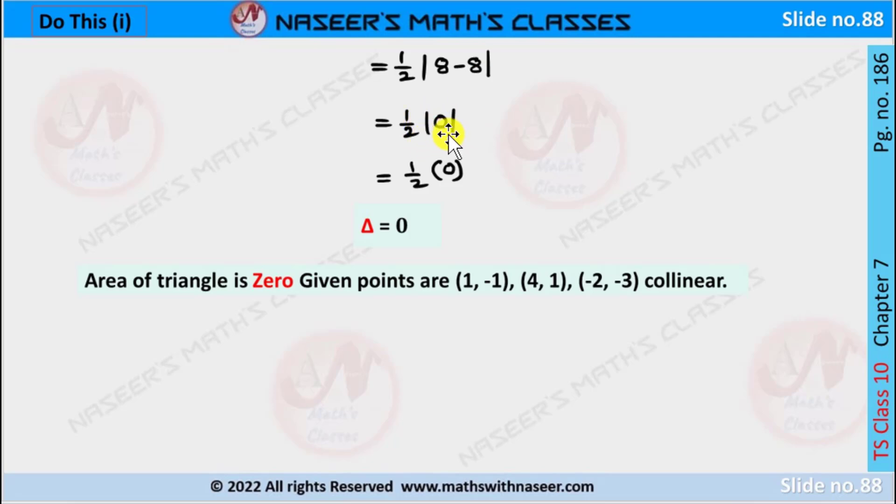Here 8 - 8 is 0, then ½|0|, so it can be written as ½ × 0. Zero times anything is 0. Therefore, area Δ is 0.